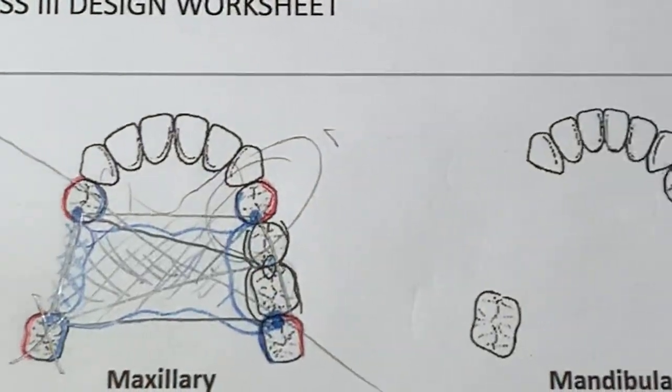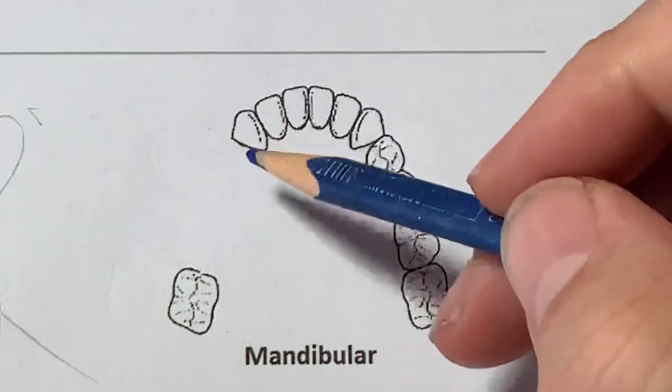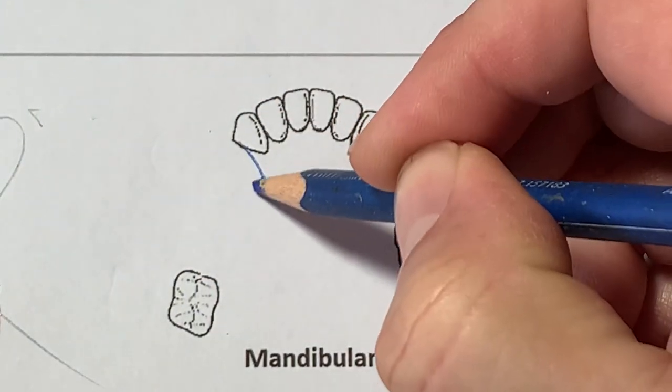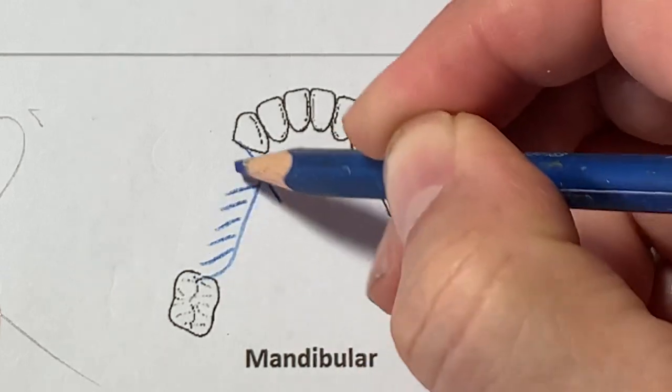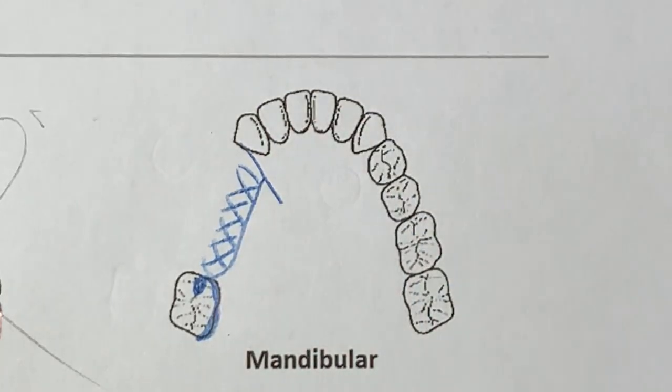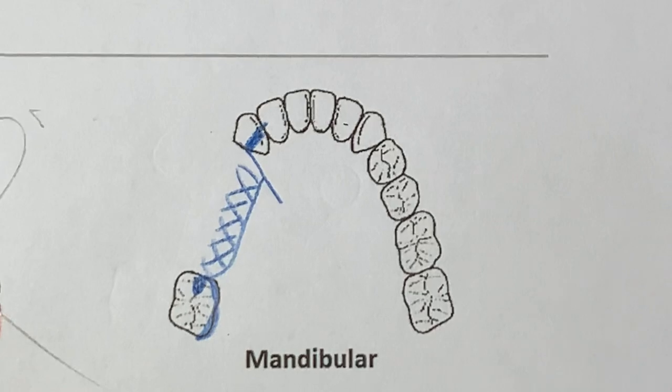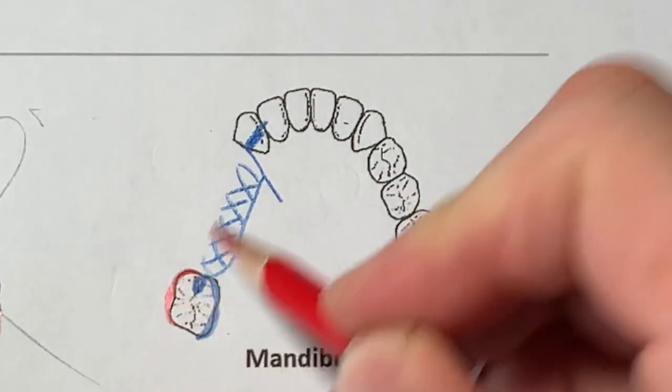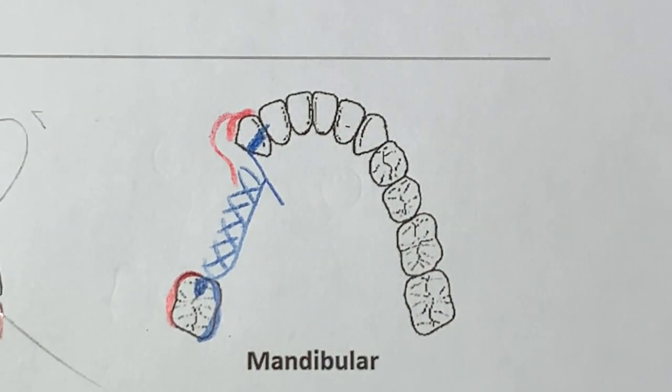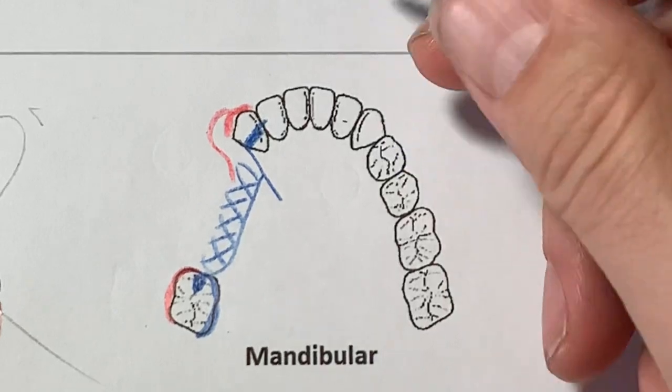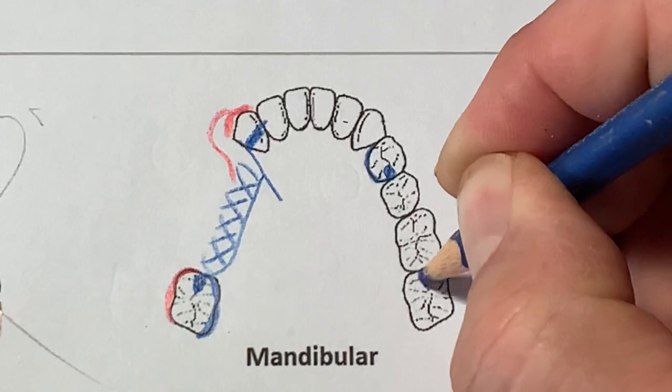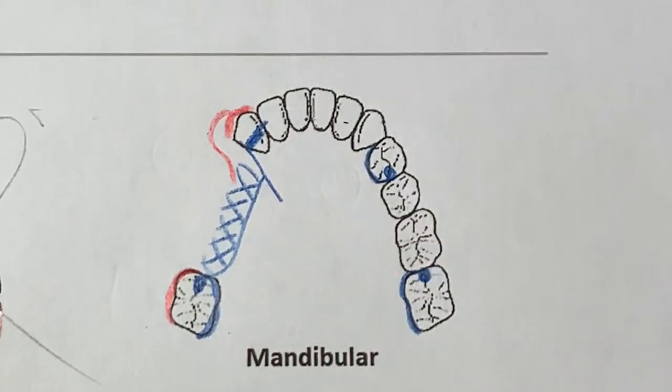So there's our first Class 3 design, and now we're going to do the unilateral edentulous base Class 3. This is Kennedy Class 3 we're talking about. On the lower, outline the edentulous areas, clasp the teeth adjacent to this edentulous area in the simplest form possible. Obviously keeping undercut and aesthetics and function, everything in mind. Now again, on the opposing side, there's no modification here at all whatsoever. So if we can, we'll try to move one as anterior as possible, and one as posterior as possible.